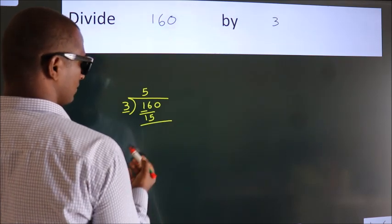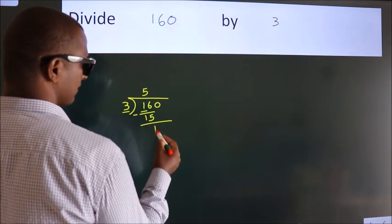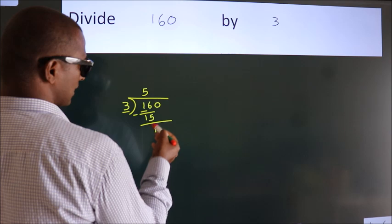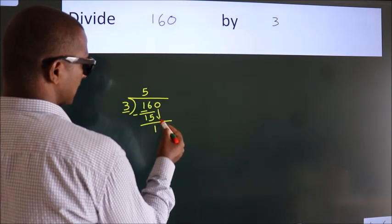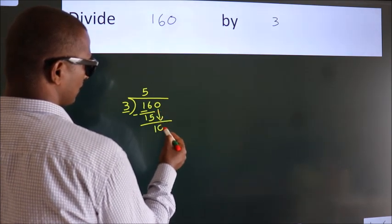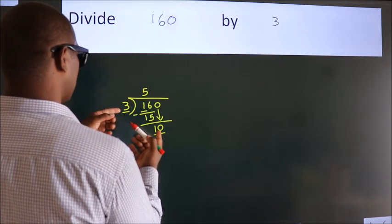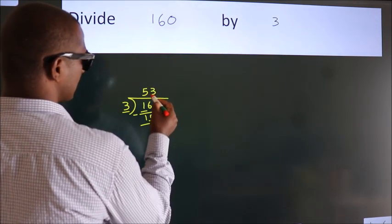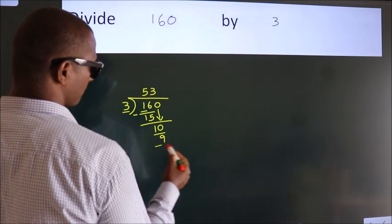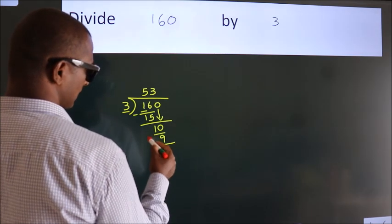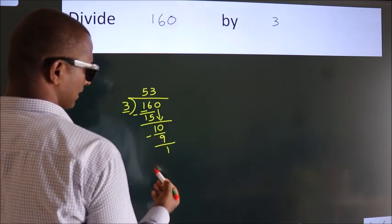Now we should subtract. We get 1. After this, bring down the beside number, so 0 down. So 10. A number close to 10 in the 3 table is 3 times 3 equals 9. Now we subtract. We get 1.